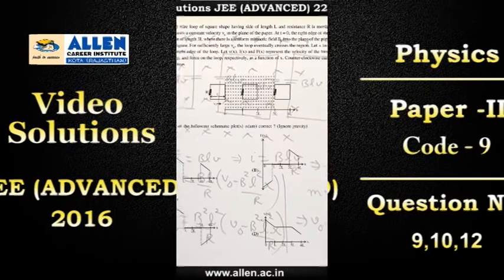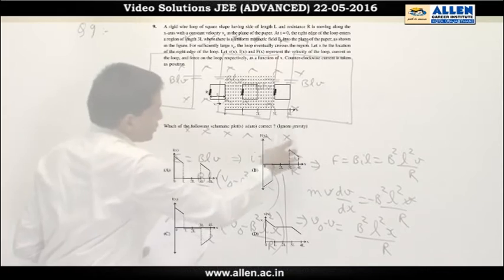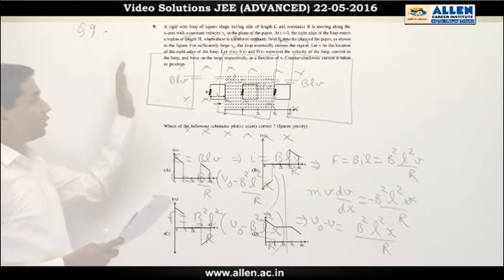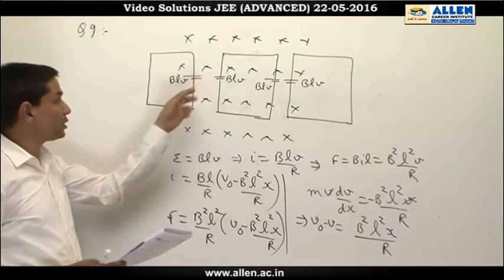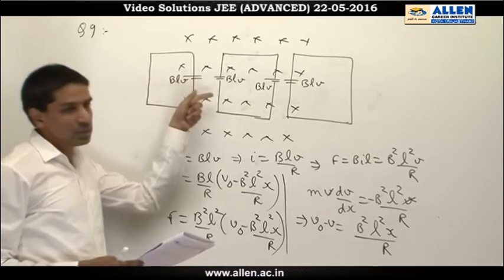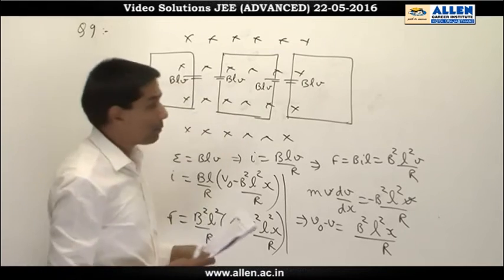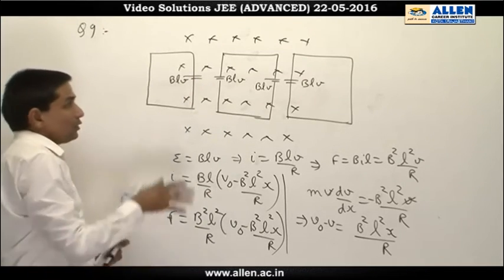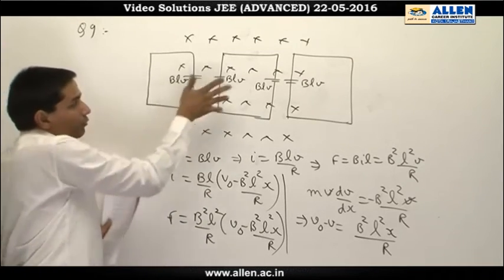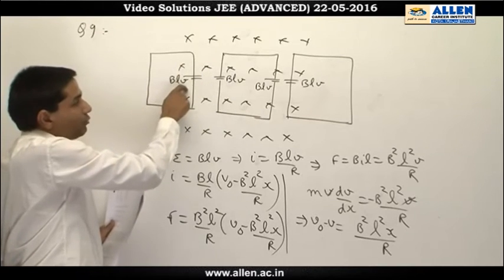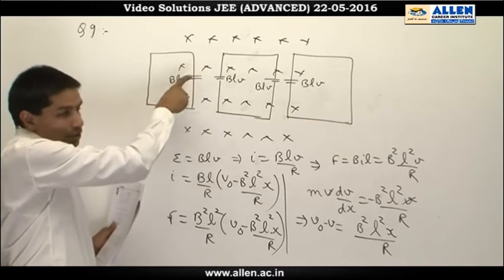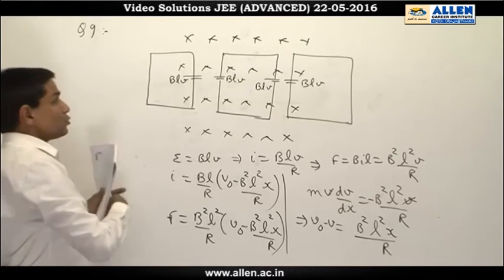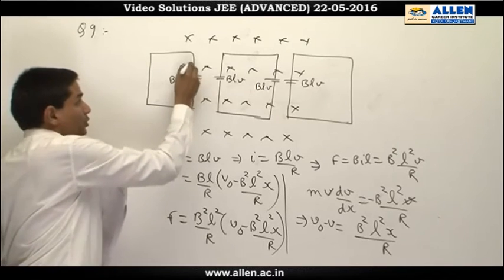In this particular question, there is a particular region in which a magnetic field is present. There is a loop which enters this particular region. As soon as it enters, the part which is lying within this particular magnetic field gets an EMF of v⃗ × B⃗, that is Blv in this direction. There is a current which flows, which tries to retard its motion.